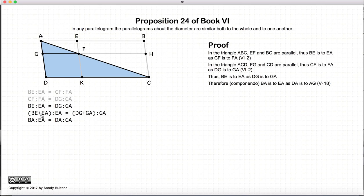Now BE plus EA is just equal to BA, right? And likewise, DG plus GA is equal to DA. So now we have another ratio. BA to EA is equal to DA to GA.